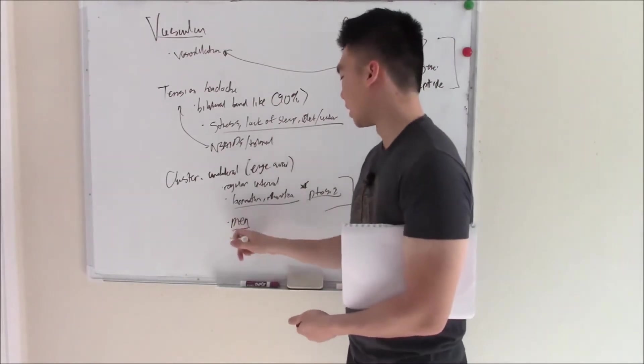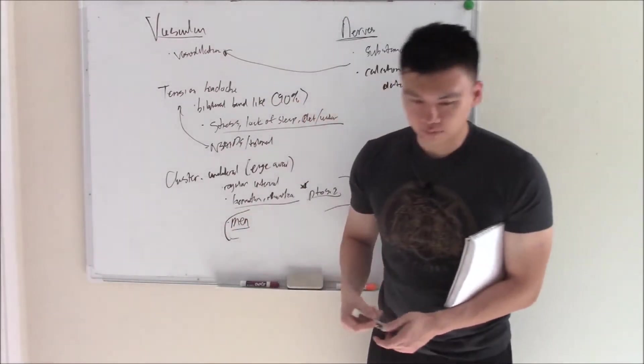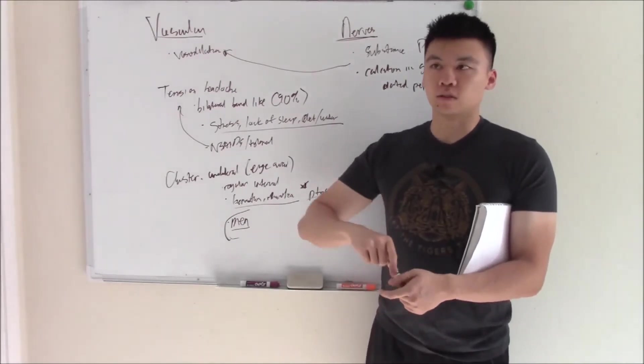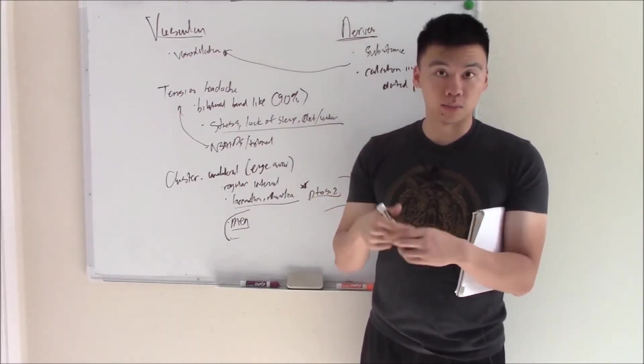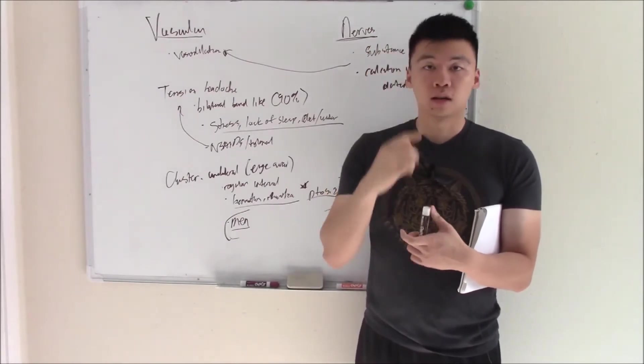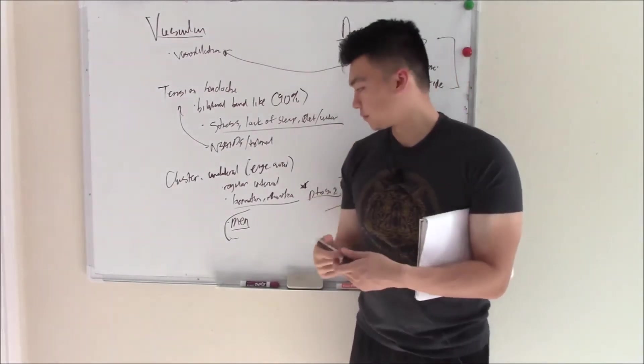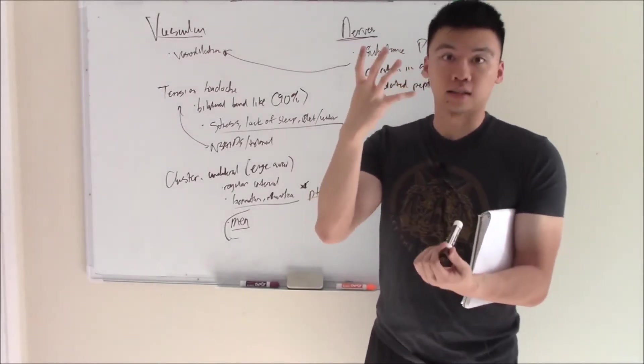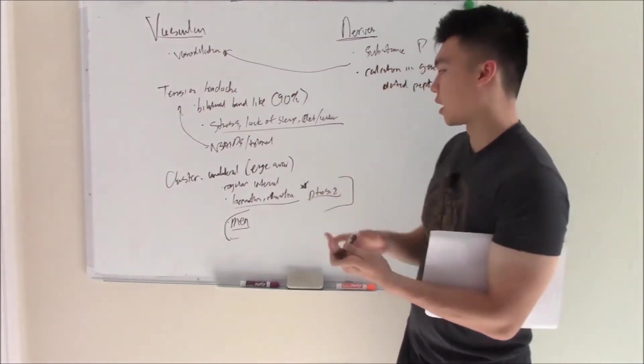Why? Again, not quite sure. Mechanism is not quite known. It seems to be some sort of vasodilation that causes compression to your trigeminal nerve. Your trigeminal nerve, recall, gives you sensation to your face. And when it causes vasodilation, it compresses that trigeminal nerve, then causes that sharp, strong pain around your eye.